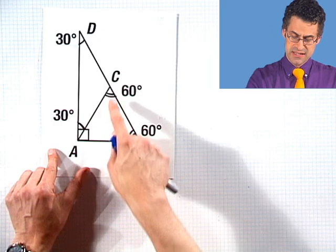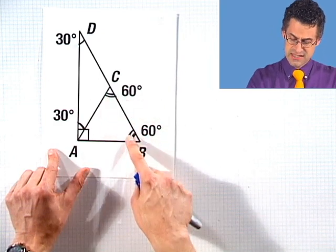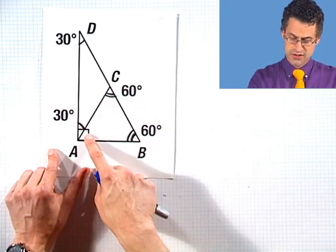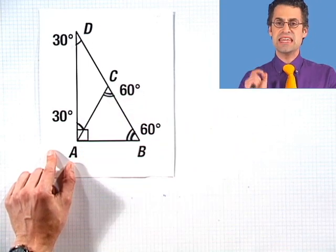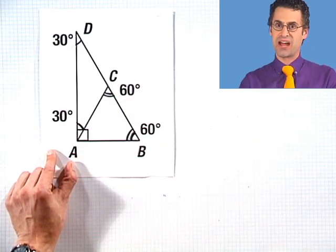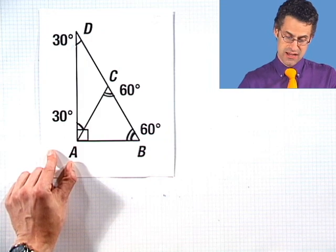Well, check it out. We've got a 60 degree angle here, a 60 degree angle here, a 60 degree angle here. Triangle ACB is an equiangular triangle. Very, very nice.